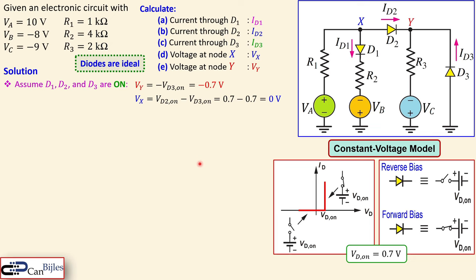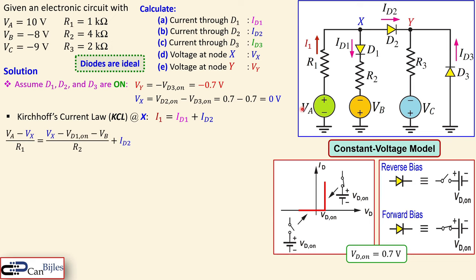We now use the VX and VY values and set up Kirchhoff's current law at node X. The current I1 flowing through R1 produces ID1 and ID2, so: I1 equals ID1 plus ID2. I1 is (VA minus VX) divided by R1. ID1 is (VX minus VD1_on minus VB) divided by R2. For ID2 we cannot use Ohm's law because there is no resistor in that branch, so we just call it ID2.